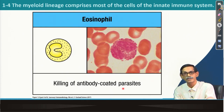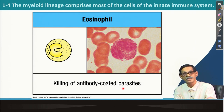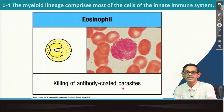Eosinophils are also present in blood and are responsible for killing parasites — specifically those which are already coated by antibody. That means after infection, antibody will be generated to coat the parasite, and if the parasite is coated with antibody, it is then killed by eosinophils.